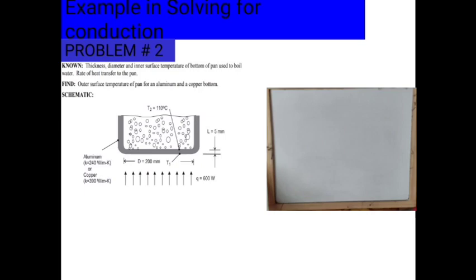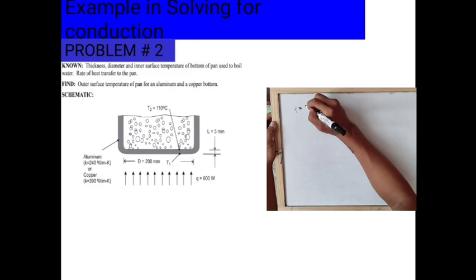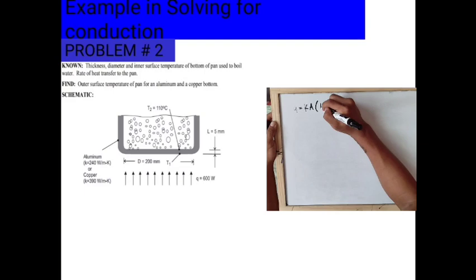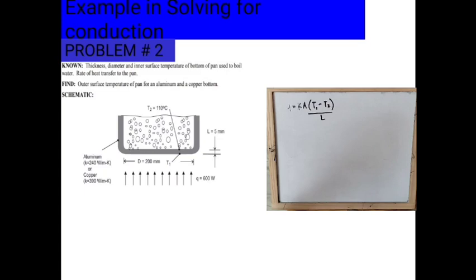In problem number 2, the known is thickness, diameter, and inner surface temperature of the bottom of the pan used to boil water. Find the outer surface temperature of the pan for an aluminum and a copper bottom. We're going to find temperature 1 for aluminum and copper. The general formula is: Q equals K times the area multiplied by T1 minus T2, the difference of temperature, over L.